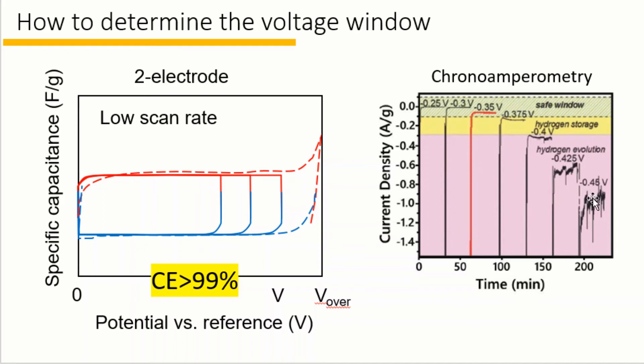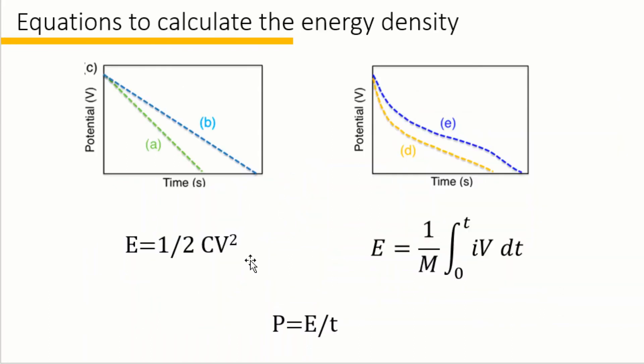So for here, negative 0.35 volts will be suitable for operating. Now, we know the voltage window and we also have CV curve or GCD curve to calculate the capacitance.